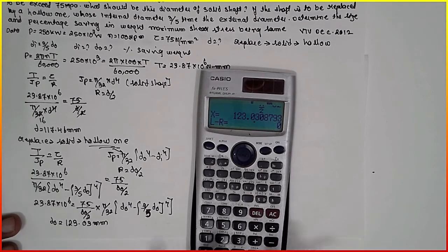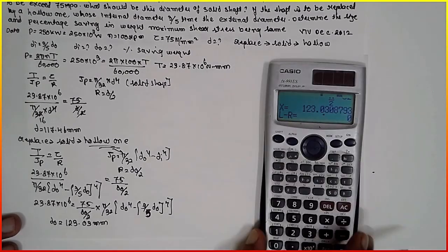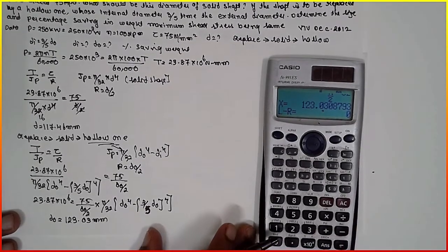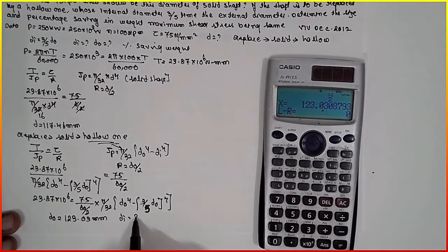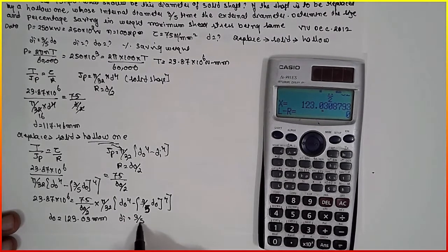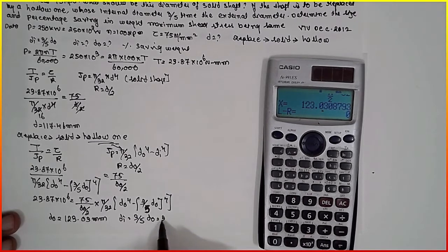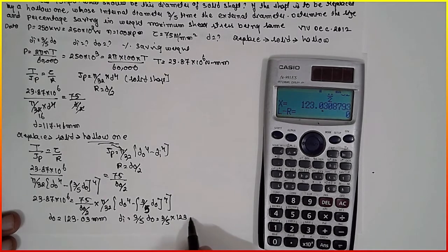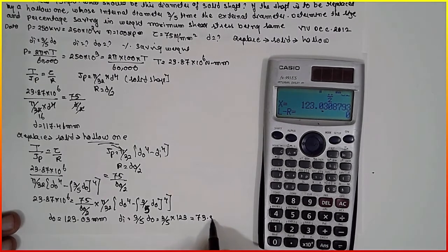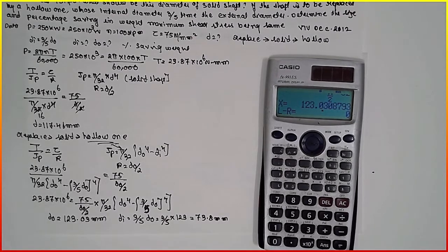Once D0 is known, find Di: Di = (3/5) × D0 = (3/5) × 123 = 73.8 mm.